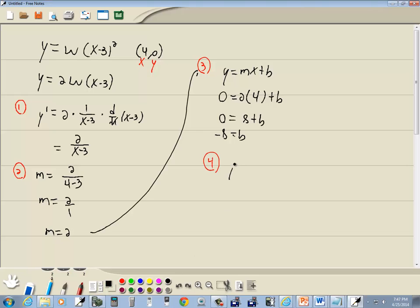Step 4. We want to write our answer down. We want to plug in the m we found in step 2, so we said m was 2, so we've got 2x. And b from step 3, which we said was negative 8. So our answer is going to be y equals 2x minus 8.